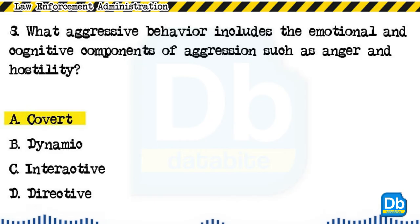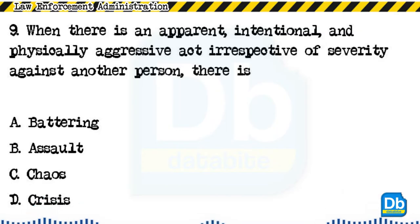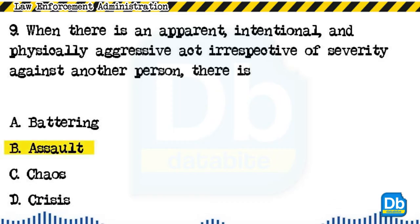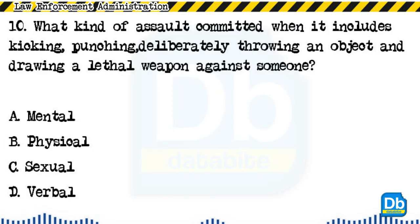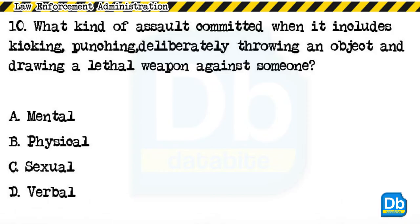The answer is A, covert. Question 9: When there is an apparent intentional and physically aggressive act, irrespective of severity, against another person, there is: a) battering, b) assault, c) chaos, d) crisis. The answer is B, assault. Question 10: What kind of assault is committed when it includes kicking, punching, deliberately throwing an object, and drawing a lethal weapon against someone? a) mental, b) physical, c) sexual, d) verbal.